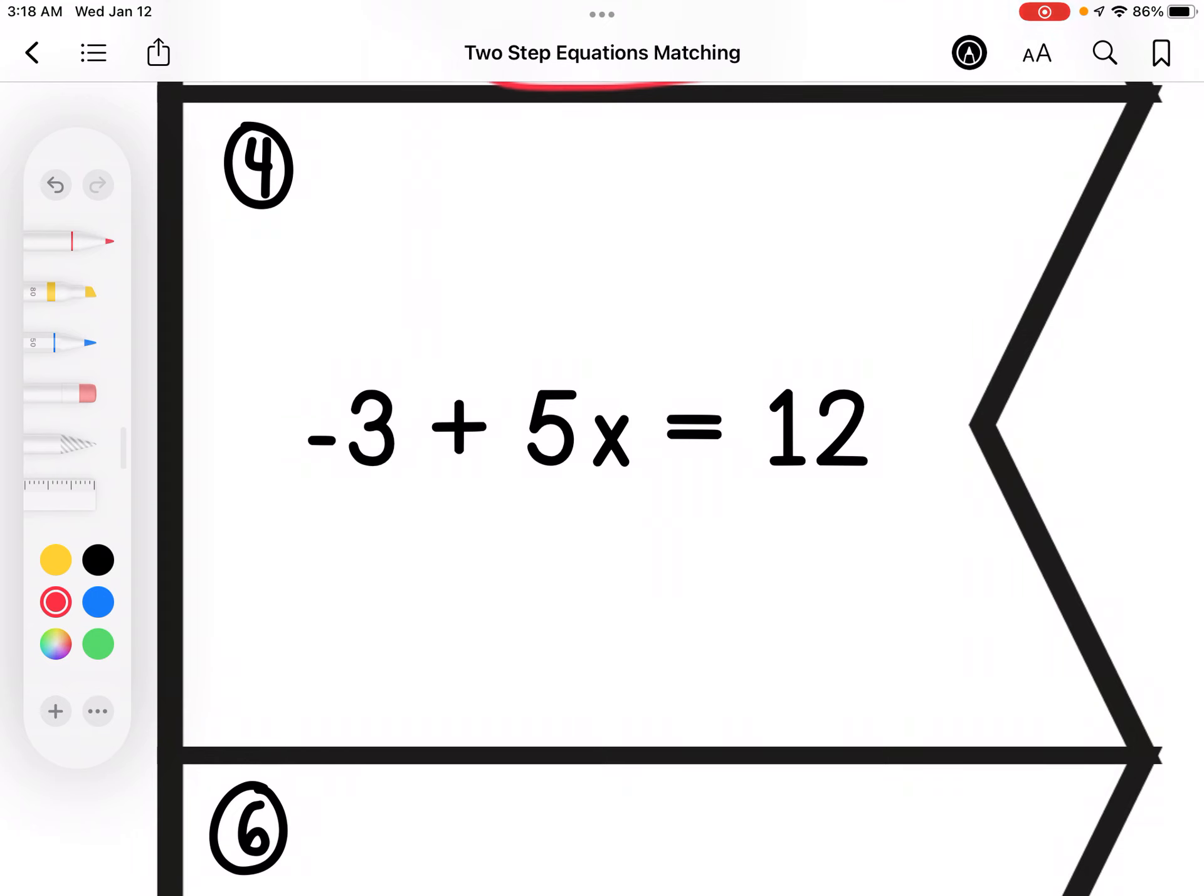Alright, so I have a negative 3. That's my constant. So the opposite would be to add 3. I'm going to divide by 5. x equals 3.